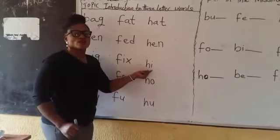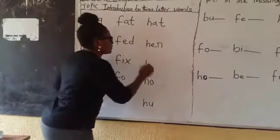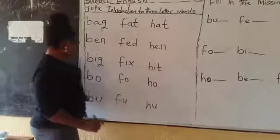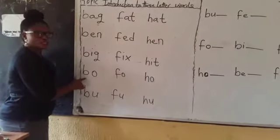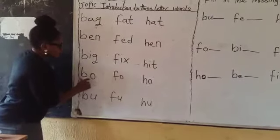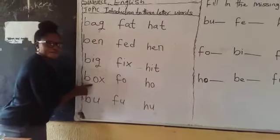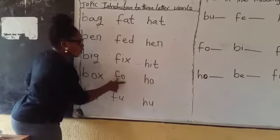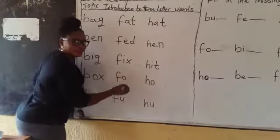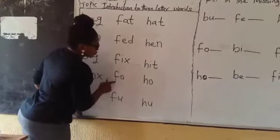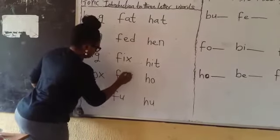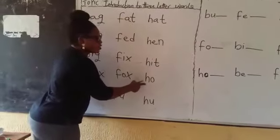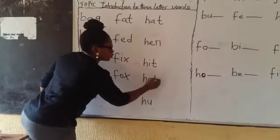Now let's go to hi. This is what? Hi. Now this is bo. Bo. Then I fix my x. It becomes what? Box. Again, box. This is fo. Fo. Again, fo. Then I fix my x. This is what? Fo. Then I fix my x. It becomes fox. Now this is what? Ho. Again, ho. Then I add my x. It becomes what? Hot.